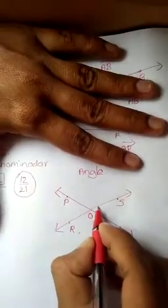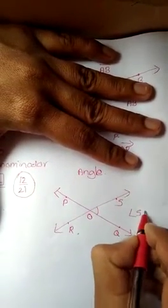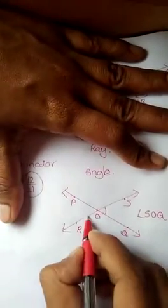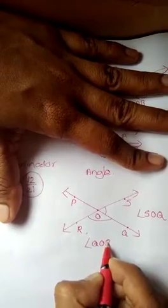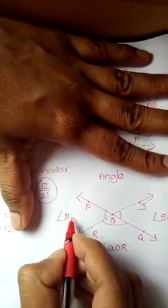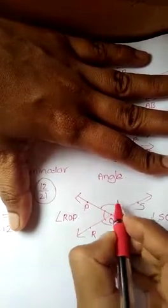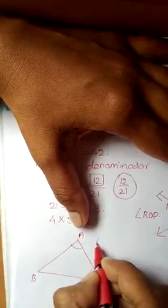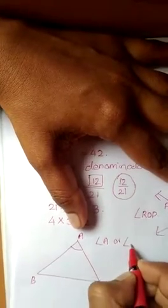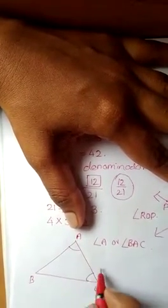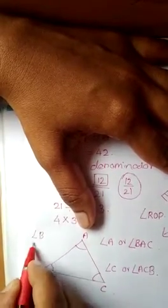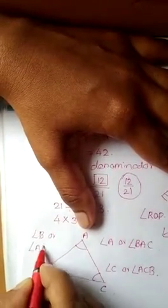In this figure, the angles are named at the meeting point. The first angle is angle SOQ, the second is angle QOR, the third is angle ROP, and the fourth is angle POS. Now consider triangle ABC — here the line segments form angles. This angle is called angle A or angle BAC, this angle is called angle C or angle ACB, and this angle is called angle B.